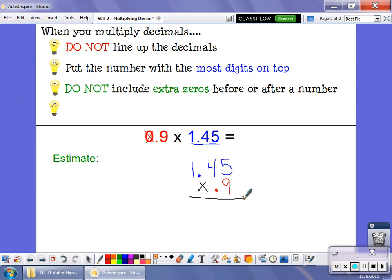And last but not least, what to keep in mind is we're going to use estimation. So here, if I were going to estimate 0.9 is close to 1, and 1.45 is close to 1 and a half. So my estimate here is going to be that my answer is going to be close to 1 and a half.